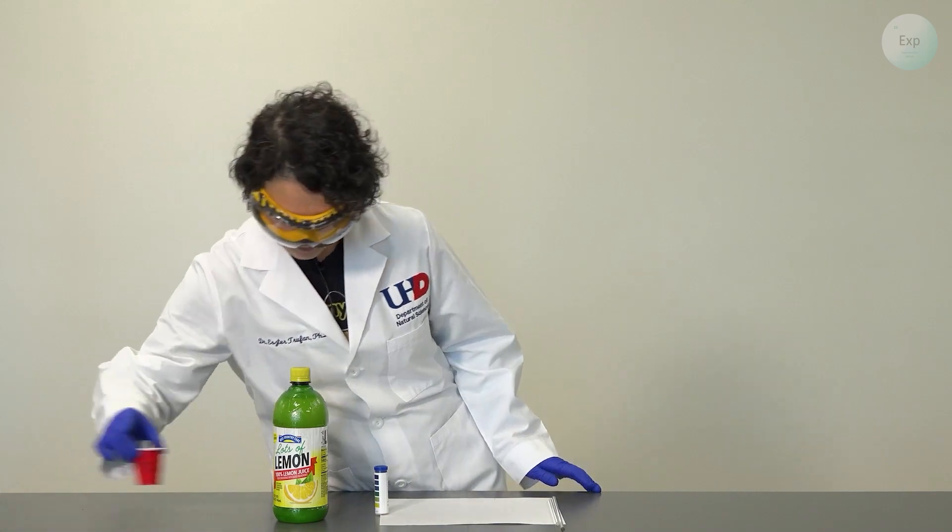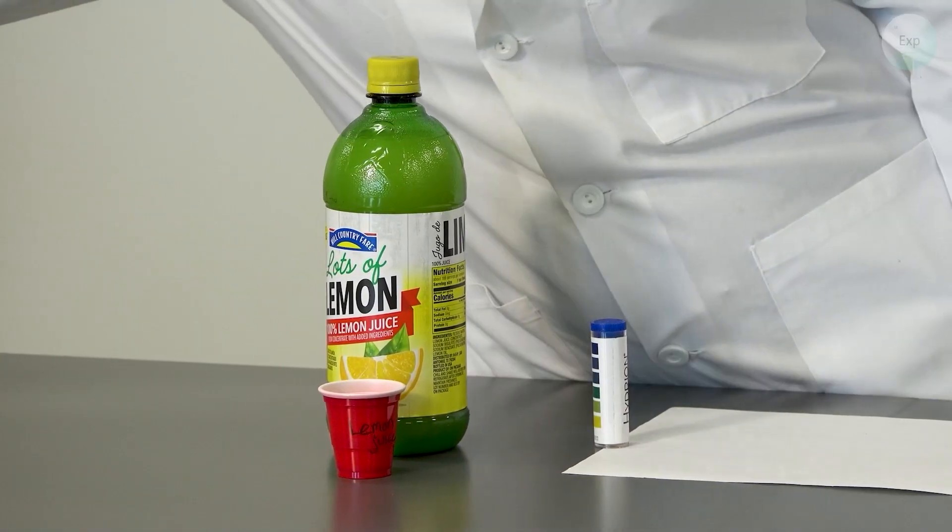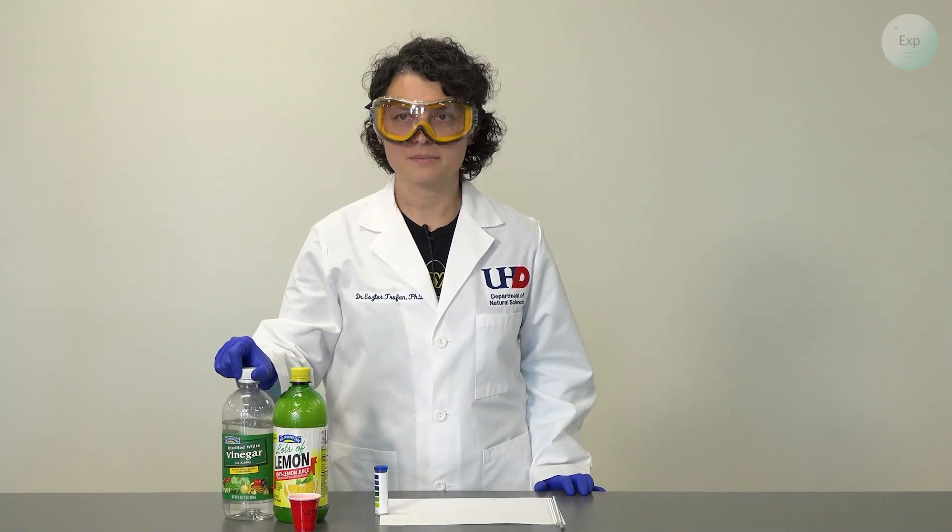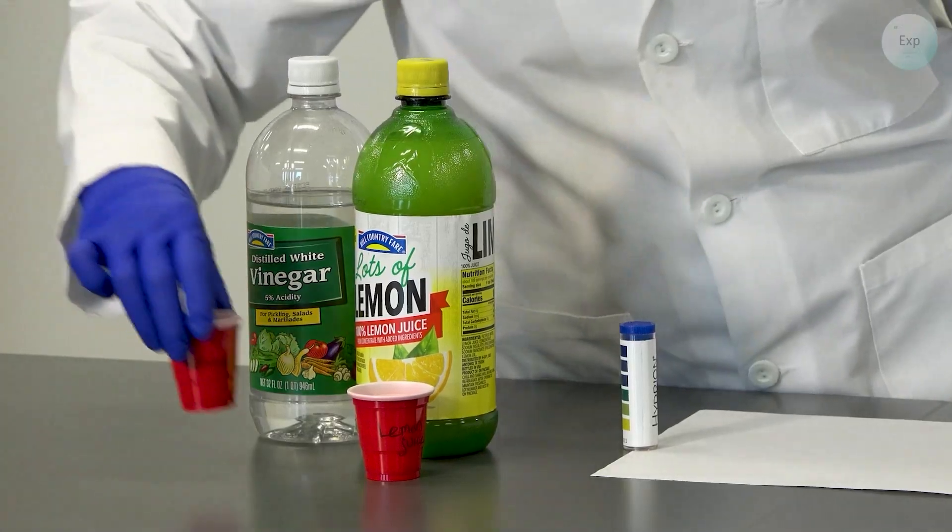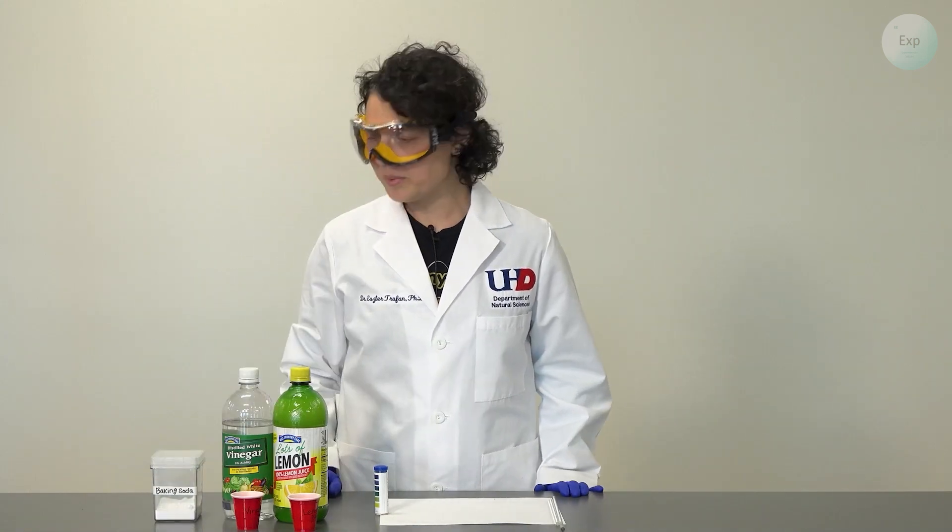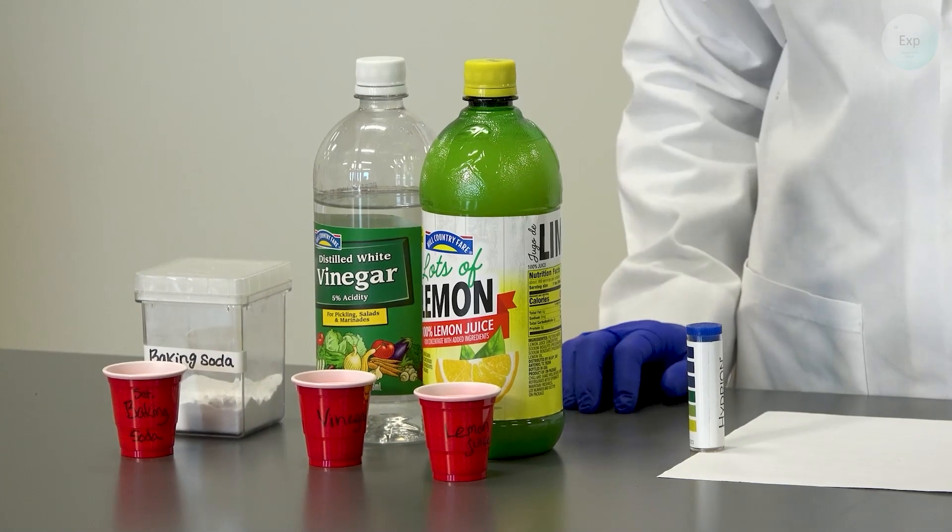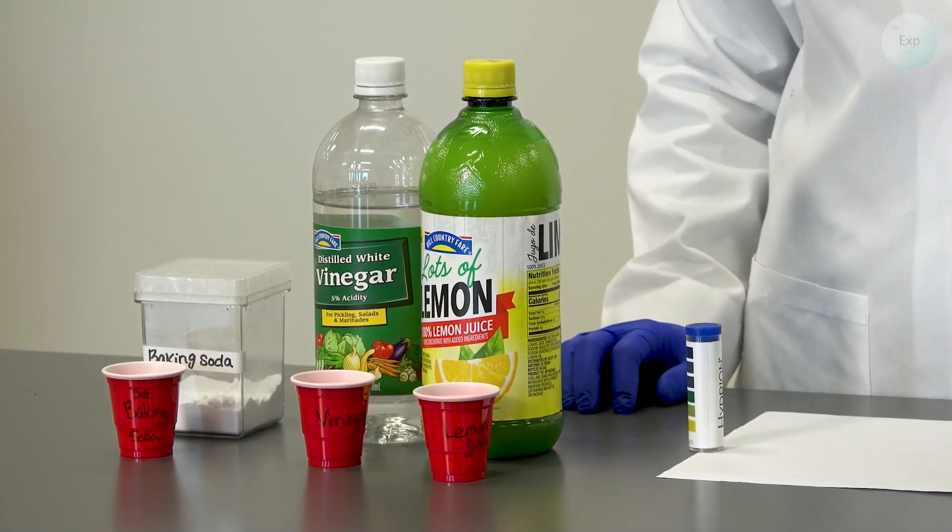For household chemicals I'm going to use lemon juice and I transferred some of it in a small cup already. I will be using vinegar and I transferred some in a cup already and I will be using baking soda that I added into a small cup and then I added water to it to make a saturated solution.